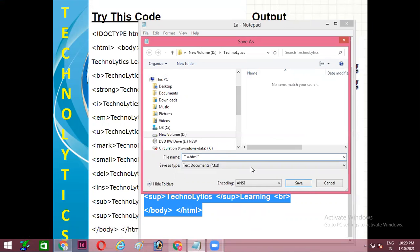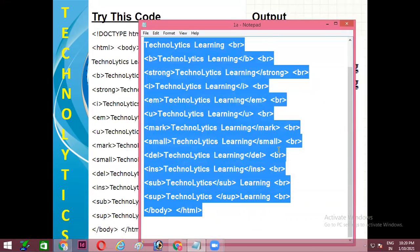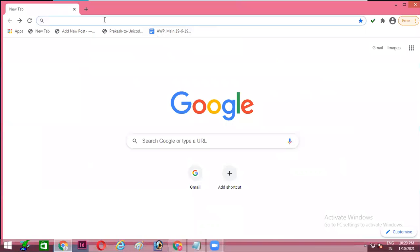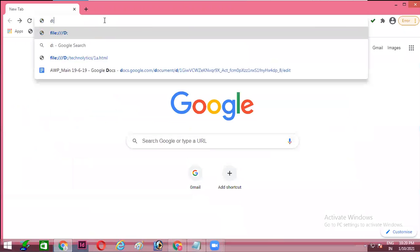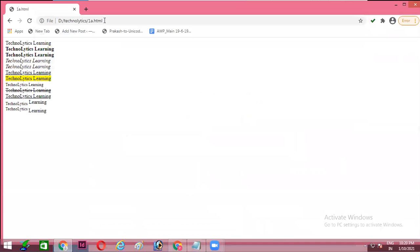So, I'm just saving it with the name 1a.html. Here I will select all files and I will click on save. Now, I will run this code from my browser. It's in D colon slash TechnoLytics slash 1a.html. And you can see the effect.